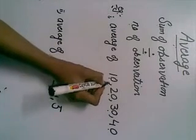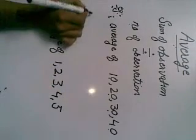For example, find average of these four numbers: 10, 20, 30 and 40.